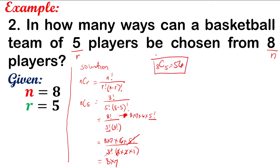The combination of 8 things taken 5 at a time is 56. Therefore, there are 56 ways to choose 5 players from 8 players.